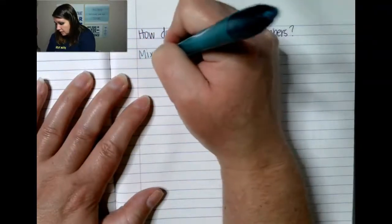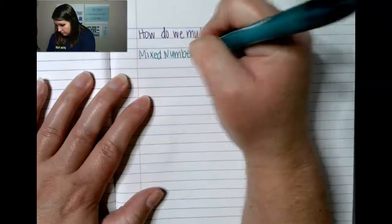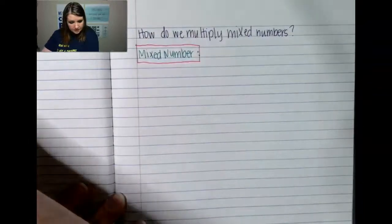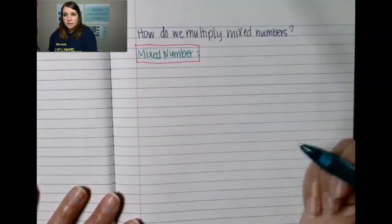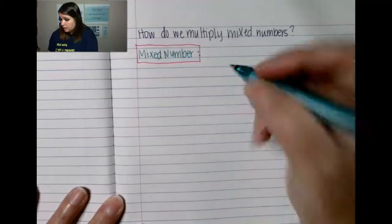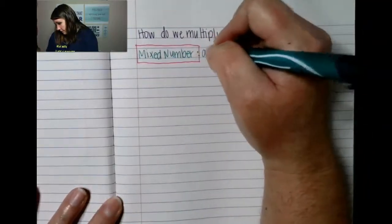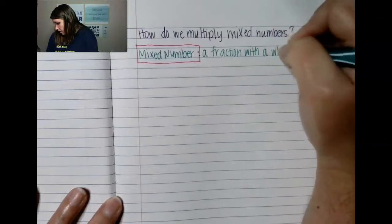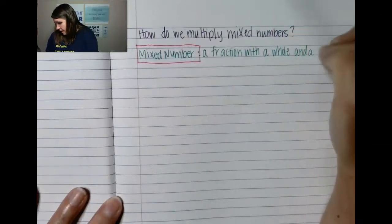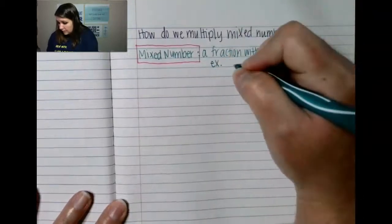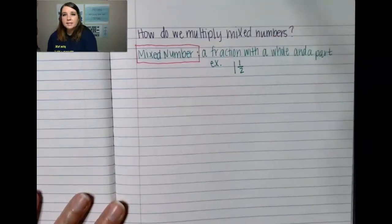Our vocabulary word: mixed number. A mixed number is a fraction that has a whole number and a fraction next to it. So it's mixed in the sense that it has both a fraction part and a whole part. For example, it would look something like this — one and one-half. That is a mixed number.